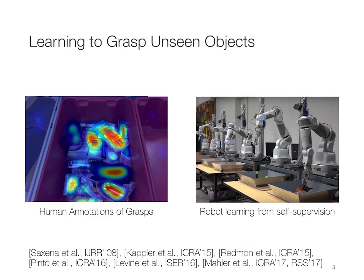There are many recent works on learning to grasp unseen objects. The main challenge here is to formulate grasping as a learning problem and to collect large-scale labeled data to train the model. Some of these works ask humans to annotate the ground-truth grasp positions, while others automatically generate robot trials in a self-supervised manner.